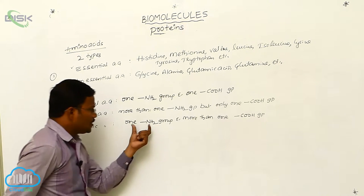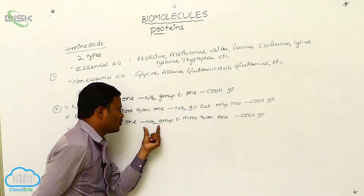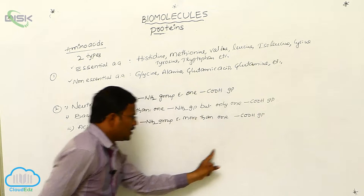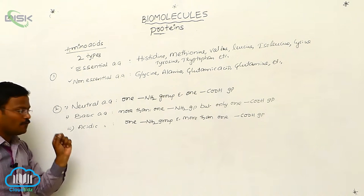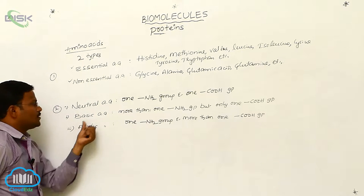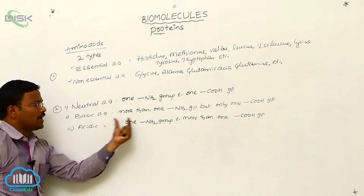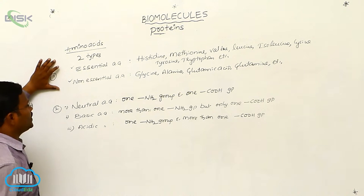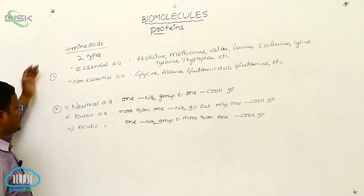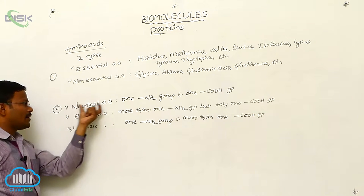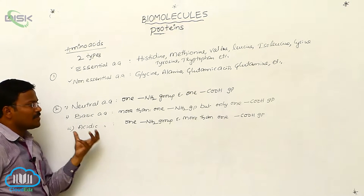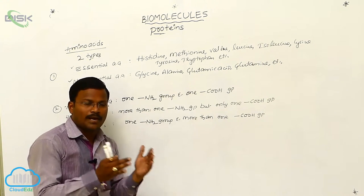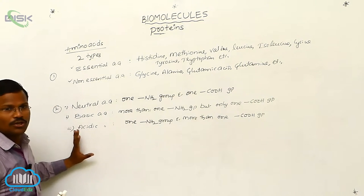If an amino acid has more than one COOH group — meaning only one basic functional group but more than one acidic functional group — the resulting amino acid will be acidic in nature. Such amino acids are called acidic amino acids. There are two important classification systems: essential vs non-essential amino acids, and neutral, basic, and acidic amino acids. The basis for this second classification is the number of amino groups and acid functional groups present in the molecule.